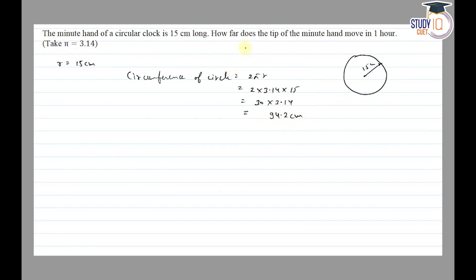So the distance traveled by the tip of the minute hand in one hour is 94.2 centimeters. Thank you.